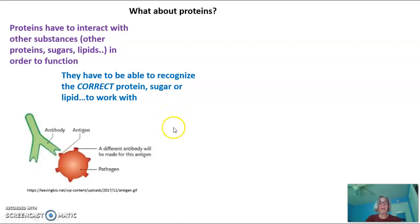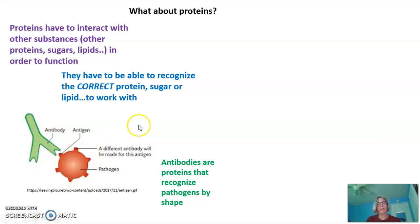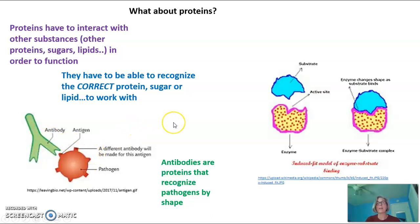An example here is an antibody. Antibodies are proteins, pictured here as this green Y-shaped molecule. Antibodies recognize pathogens — pathogens are anything that make us sick — by shape. Antibodies are proteins our bodies produce in order to fight off pathogens such as viruses and bacteria.